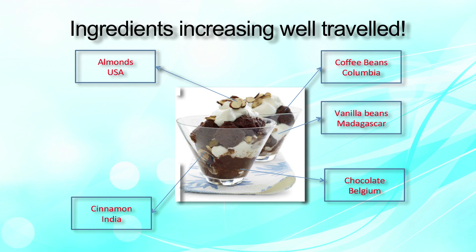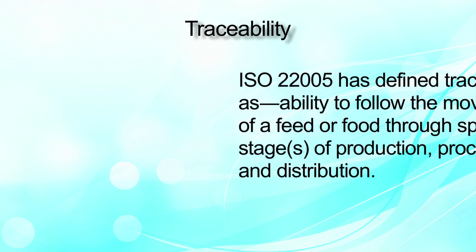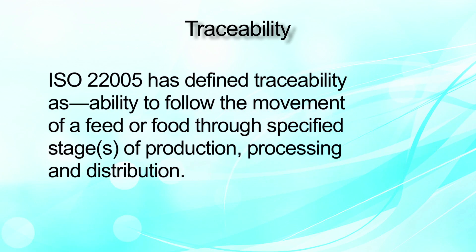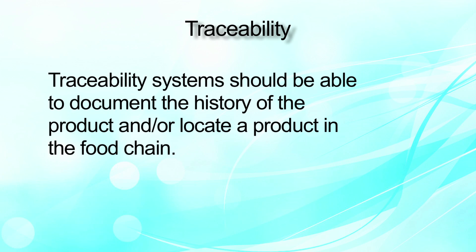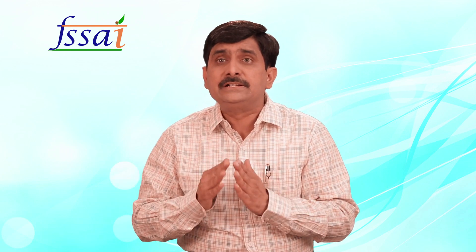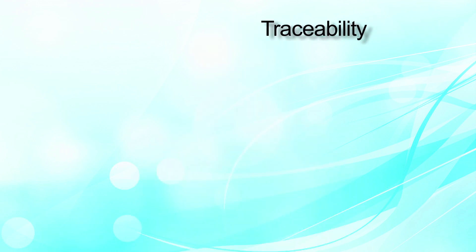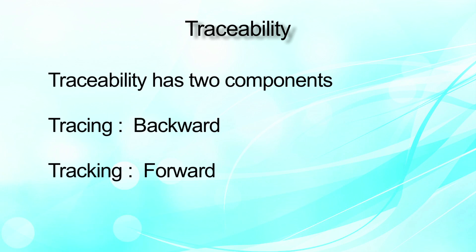Food alerts are therefore very important. Food traceability — ISO 22000 has defined traceability as the ability to follow the movement of feed or food through specific stages of production, processing and distribution. A traceability system should be able to document the history of the product or locate the product in the food chain. This is important because in case of recall, food poisoning or food safety issues, a product must be able to be recalled. Traceability has two components: tracing, which is backward traceability, and tracking, which is forward traceability.